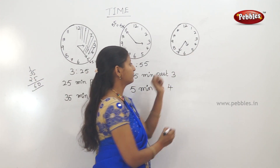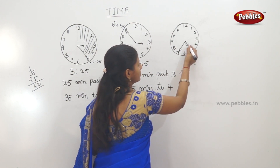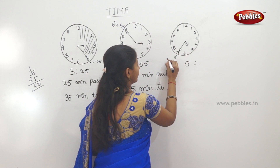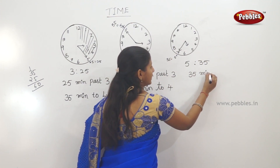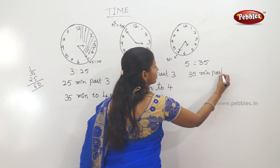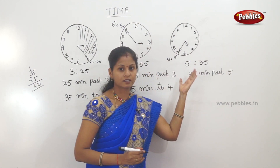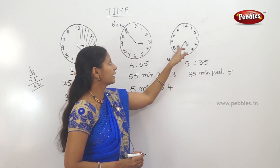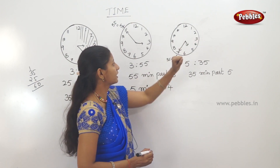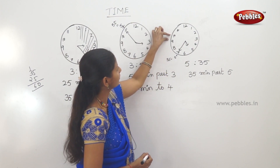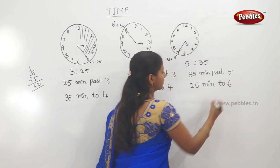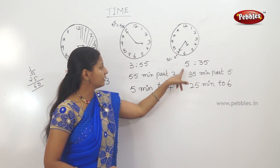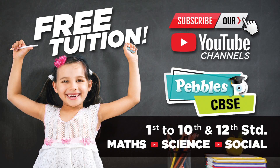Short hand 5 is 5 hours. Long hand is 7 — 7 is 35 minutes. 5 hours is 35 minutes. So the name is 35 minutes past 5. 5 is 35 minutes — so the next is 6 hours. Long hand counting: 5, 10, 15, 20, 25 minutes. So 25 minutes to 6. Let's talk about this in 3 ways.